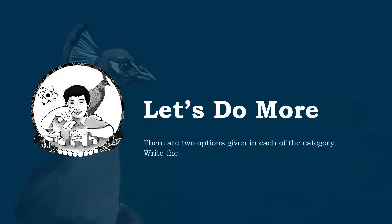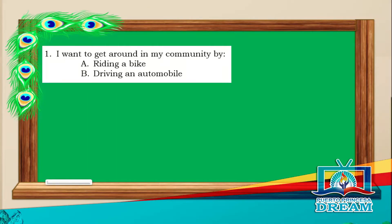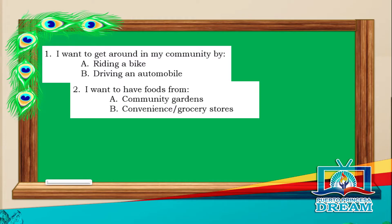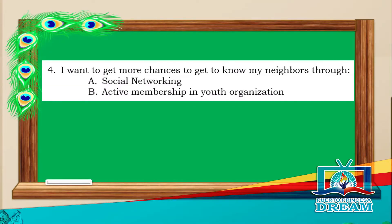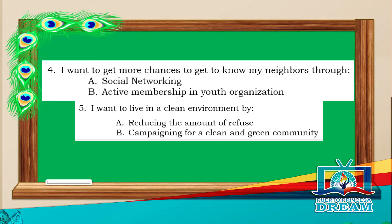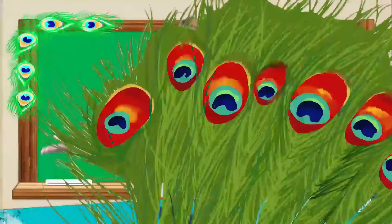Here we go! There are two options given in each category. Write the letter of your first priority in your activity notebook. Number 1: I want to get around in my community by — A. Riding a bike, B. Driving an automobile. Number 2: I want to have foods from — A. Community gardens, B. Convenience or grocery stores. Number 3: I want to play actively in games by — A. Parks, open spaces, or town plaza, B. Online games. Number 4: I want to get more chances to know my neighbors through — A. Social networking, B. Active membership in a youth organization. Number 5: I want to live in a clean environment by — A. Reducing the amount of refuse, B. Campaigning for a clean and green community. Did you enjoy answering the activity?